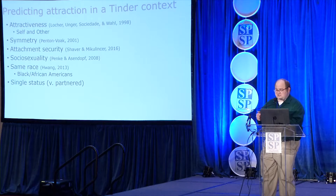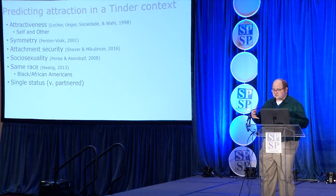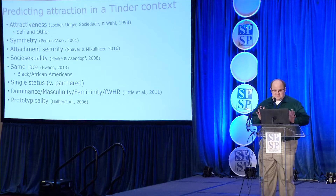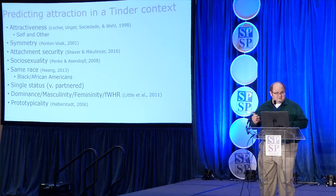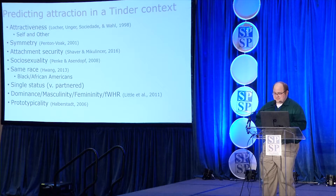We also hypothesized about people already in relationships—maybe they'd take the task less seriously since they already have a partner. There's also research showing people in relationships derogate alternatives: if they're happy or committed, they find attractive others less attractive than they objectively are. And because these decisions are based on facial characteristics, we made hypotheses based on appearance: women tend to find more dominant, masculine faces attractive, and a greater facial width-to-height ratio attractive. Men look at femininity of a face. And we all tend to prefer prototypical faces, particularly within our own race.